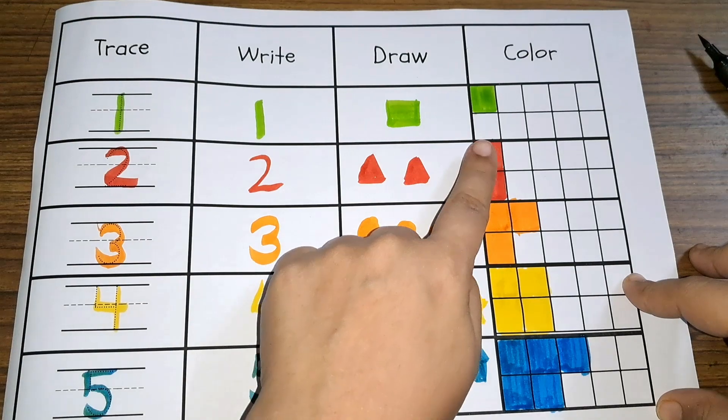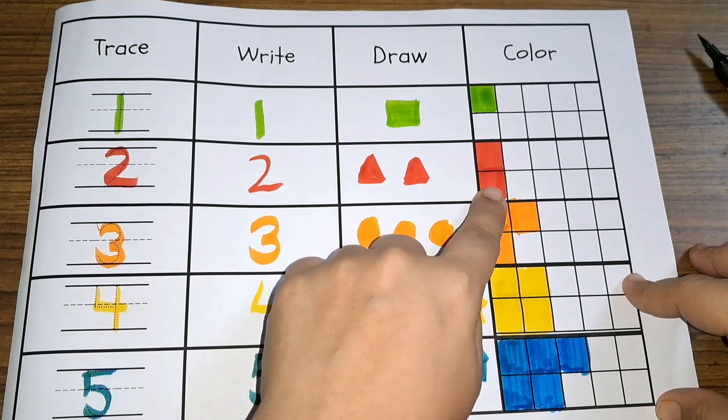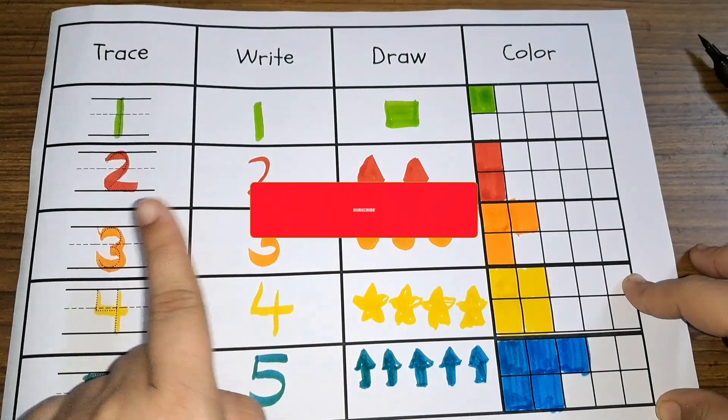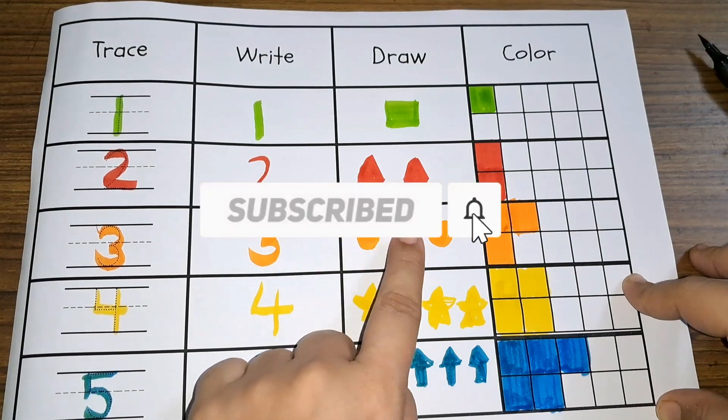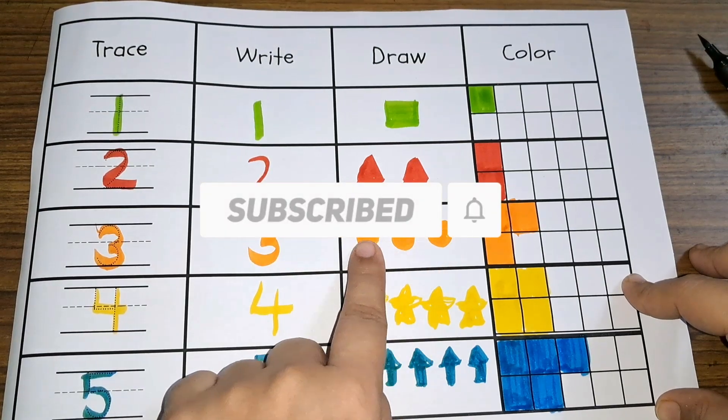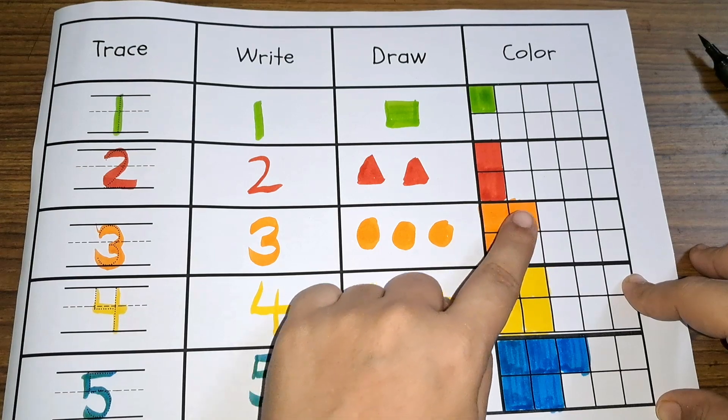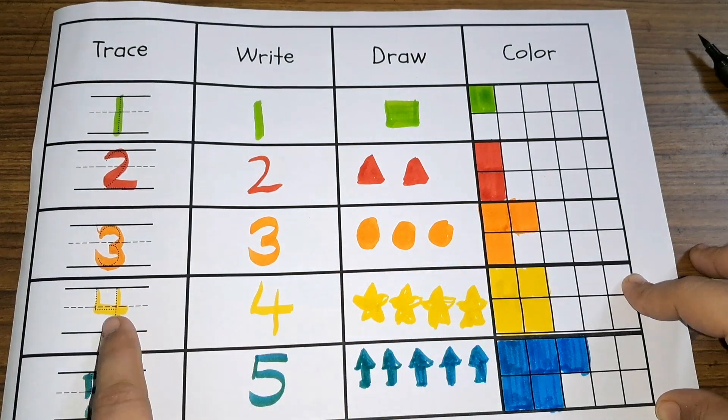Circle 3, number 3, number 3. 1, 2, 3. 3 circles, 3 orange color. 4, 4, 4, 4.